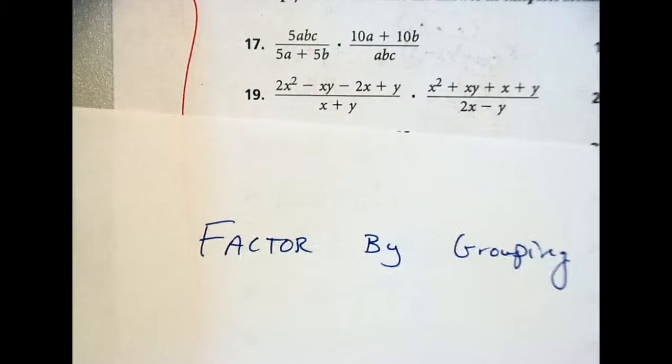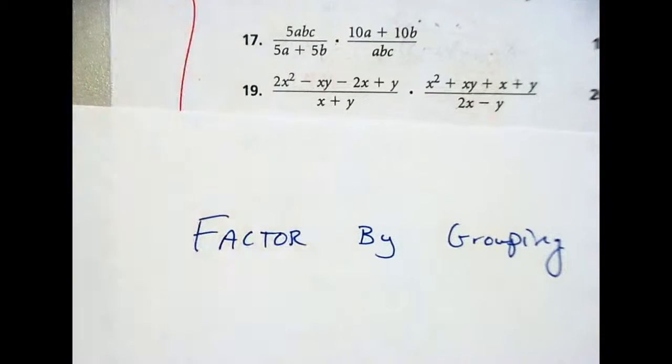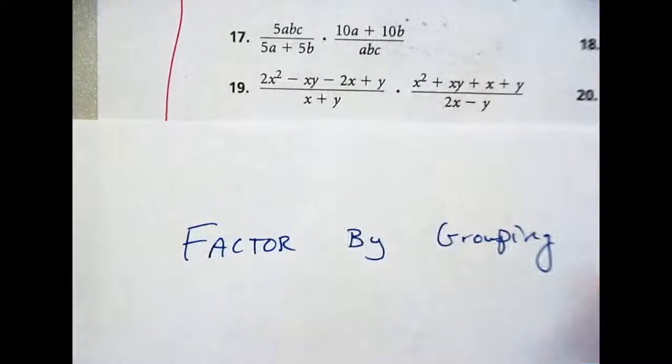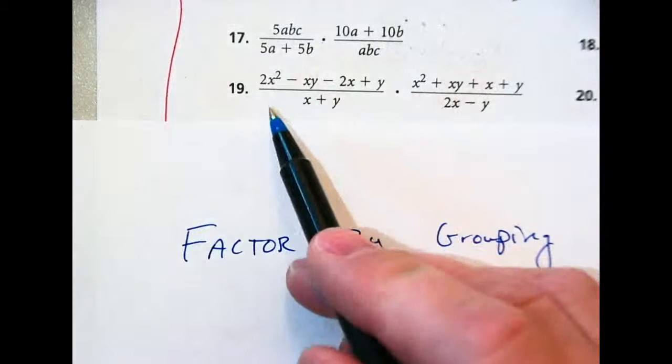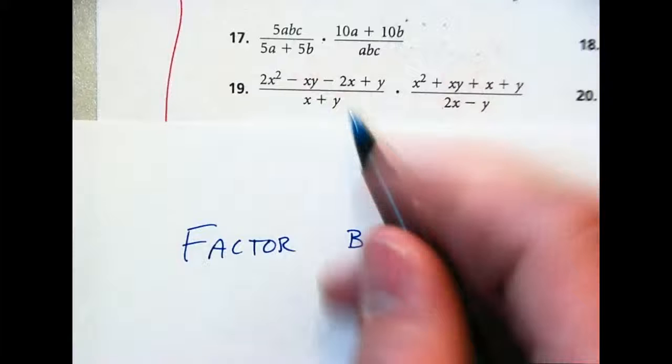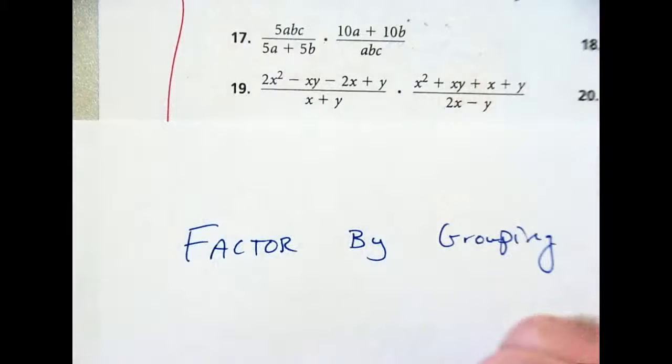So we've got factor by grouping. The way this works is when you have more than three terms, in this case we have four terms, you're going to try to group different terms together that will allow you to pull out a greatest common factor that's the same.